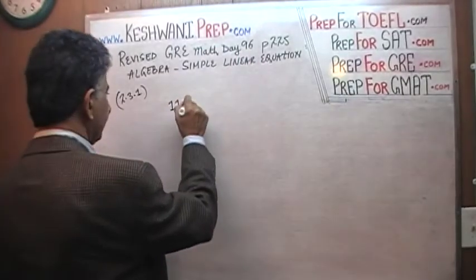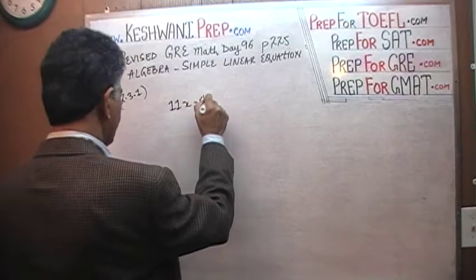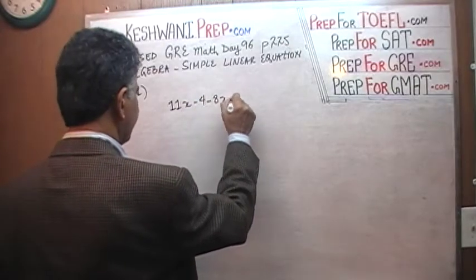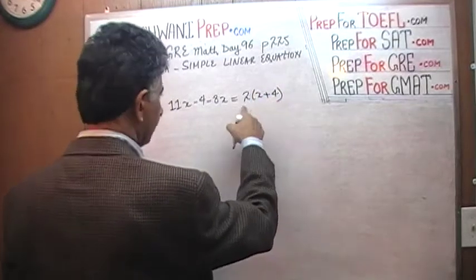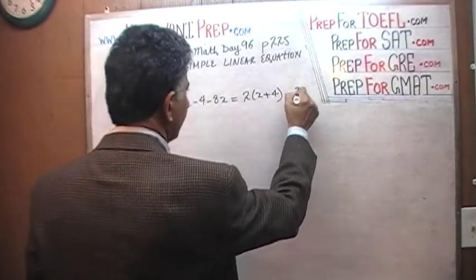We are told that 11x minus 4 minus 8x equals 2 times x plus 4, 2 times x plus 4, minus 2x.